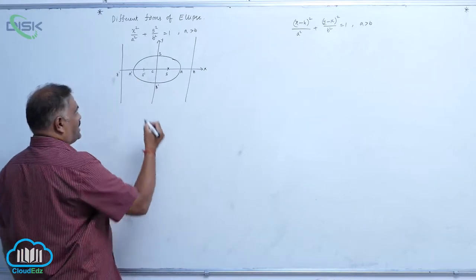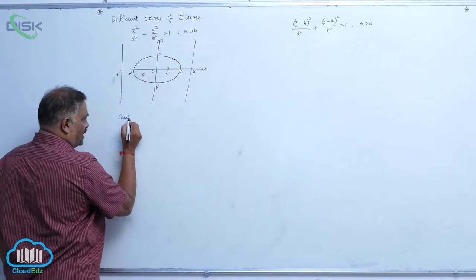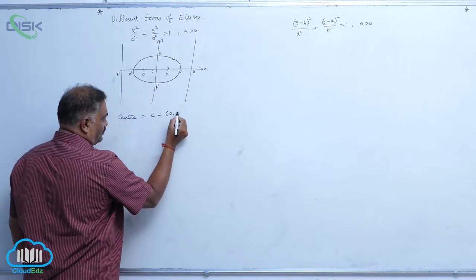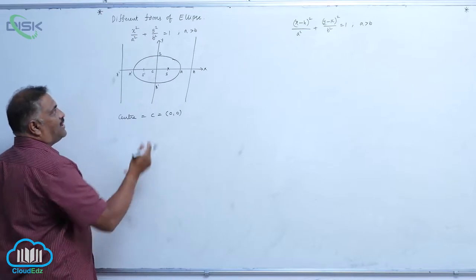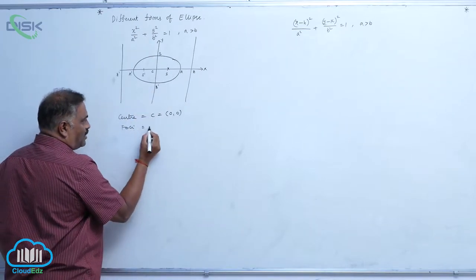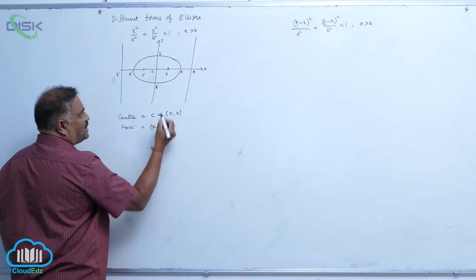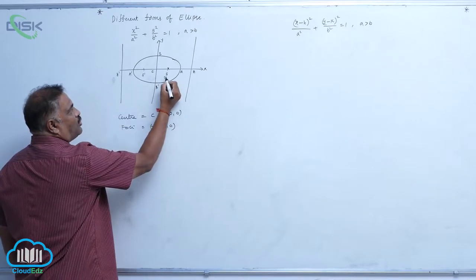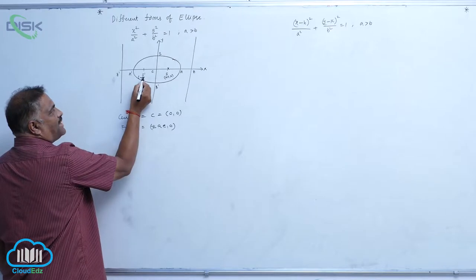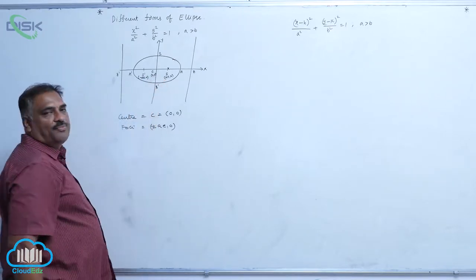The center is C = (0, 0). The foci are at (±ae, 0) — that is, (ae, 0) and (−ae, 0).